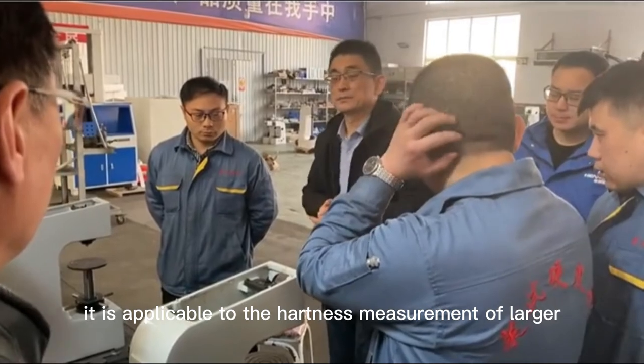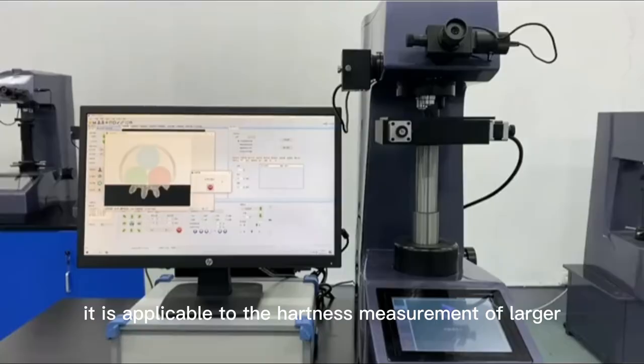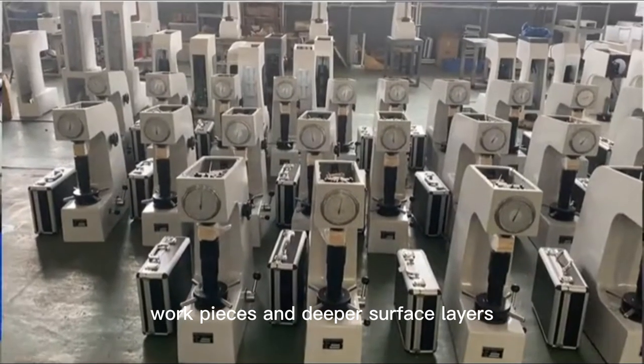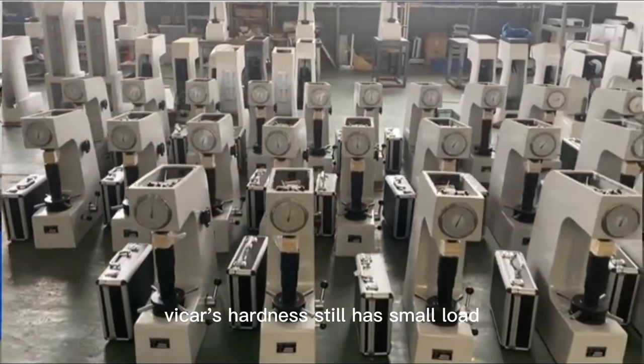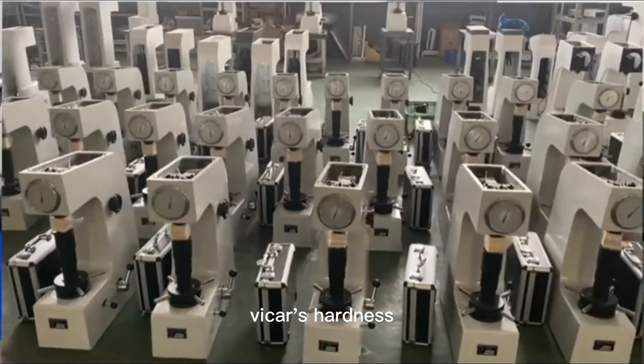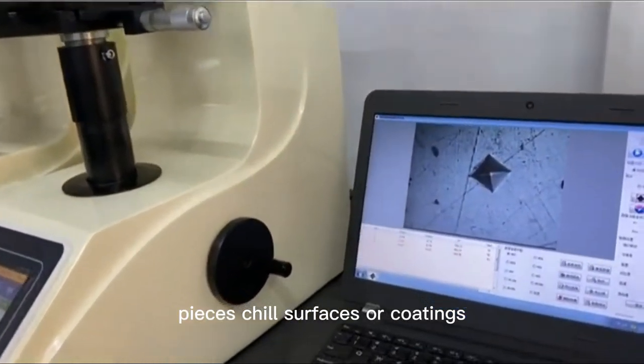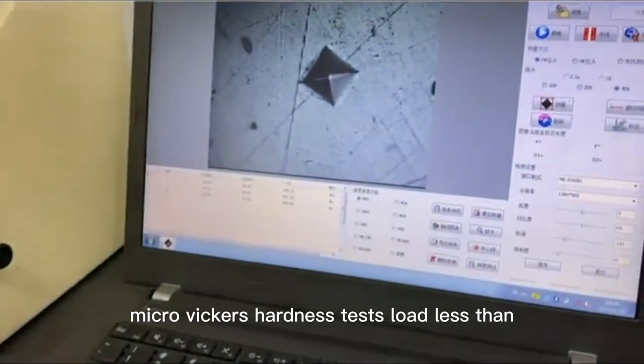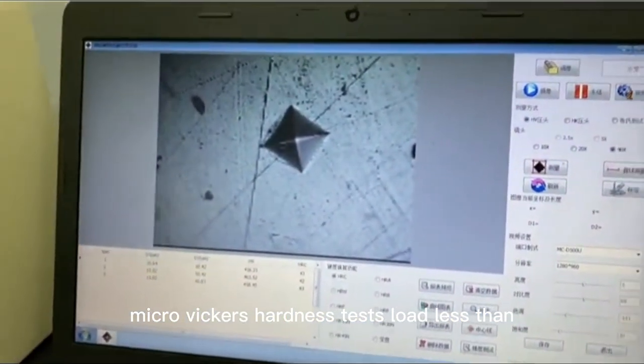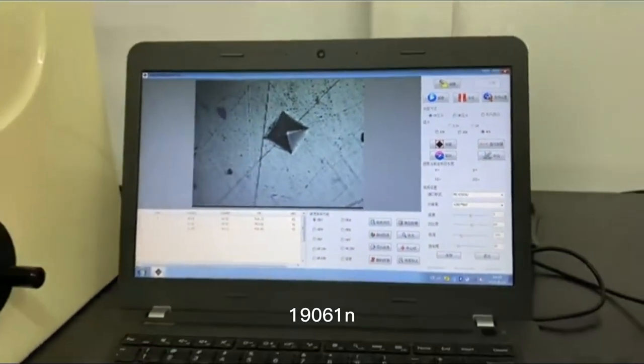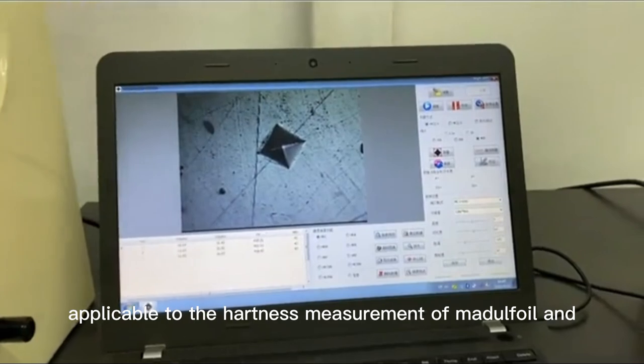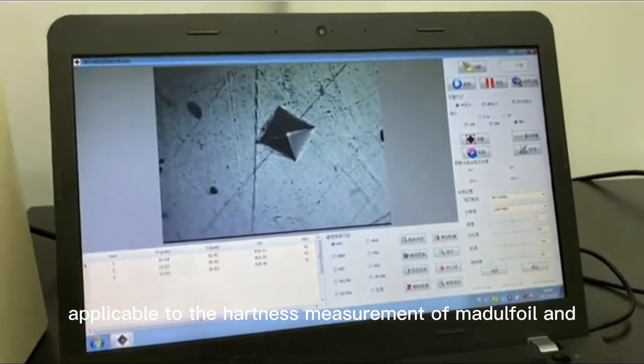Vickers hardness is applicable to the hardness measurement of larger work pieces and deeper surface layers. Vickers hardness still has small load Vickers hardness, which is applicable to the hardness measurement of thinner work pieces, chill surfaces, or coatings. Micro Vickers hardness tests load less than 1.961N, applicable to the hardness measurement of metal foil and extremely thin surface layers.